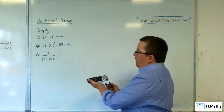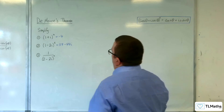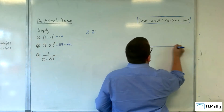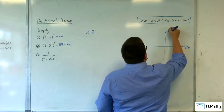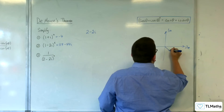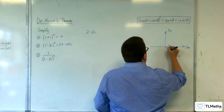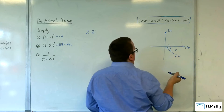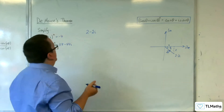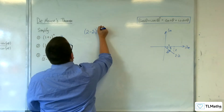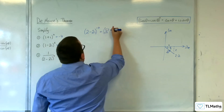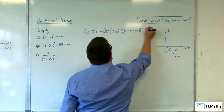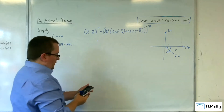Number three: 1/(2−2i)^7. We need to write 2−2i in modulus-argument form. The argument is −π/4, and √(2²+2²) = √8 = 2√2. So we want (√8 × (cos(−π/4) + i·sin(−π/4))) to the power of minus seven.